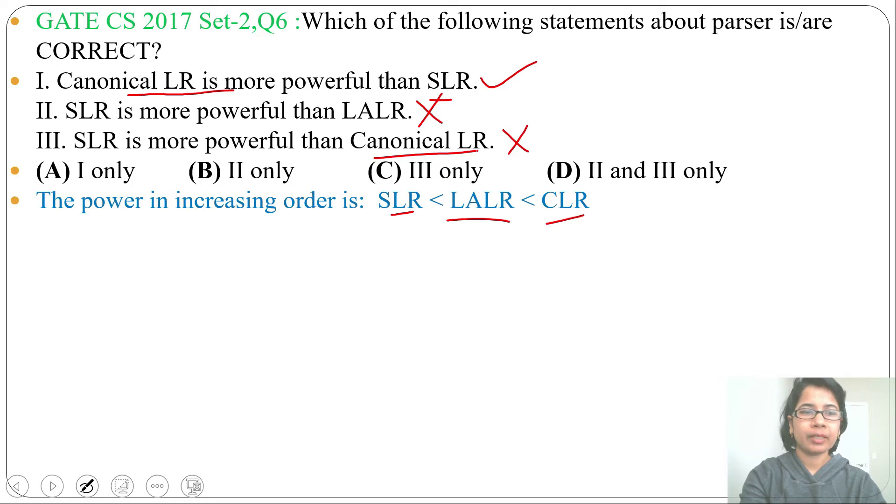We found that Statement 1 is correct. In option A, it is given as 'I only'. So the answer will be option A, 'I only'. Canonical LR is more powerful than SLR.